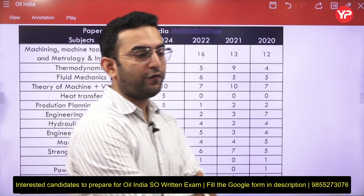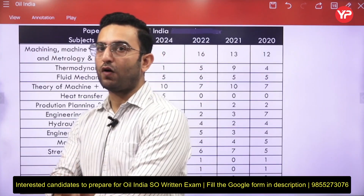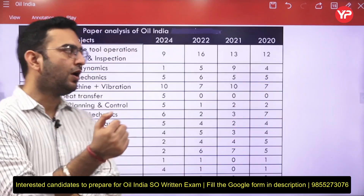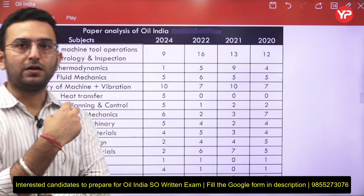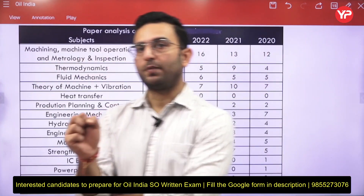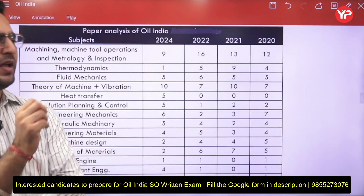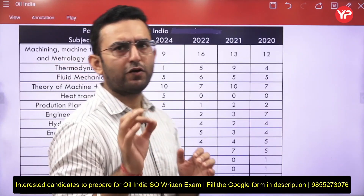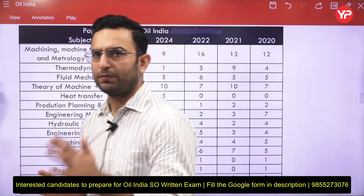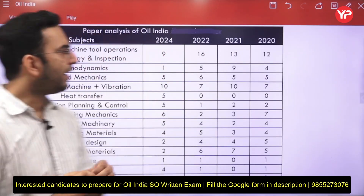There are a total of 35 vacancies for the senior officer post across all India, and the age limit for this exam is 29 years. Regarding the paper pattern, there are 100 questions in total — 60 questions comprising the technical part and the remaining 40 questions comprising the non-technical portion. The level of the paper is very simple; only theoretical questions are asked, with no numerical problems expected.